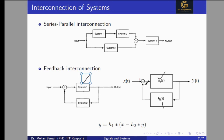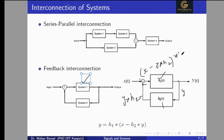This is a negative feedback system because the negative sign is applied. We usually use negative feedback to compare or check the error. At the feedback point, we achieve Y convolved with h2(T). The input to System 1 becomes X(T) minus Y convolved with h2. This whole signal passes through h1, so the output Y equals h1 convolved with the quantity [X minus h2 convolved with Y].